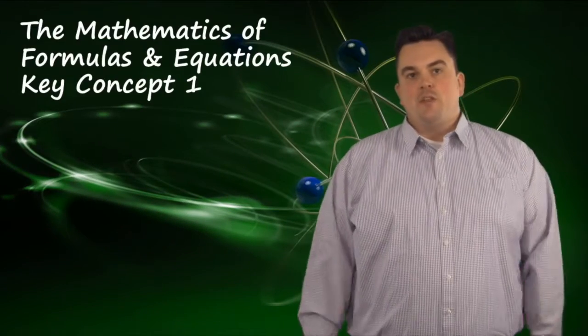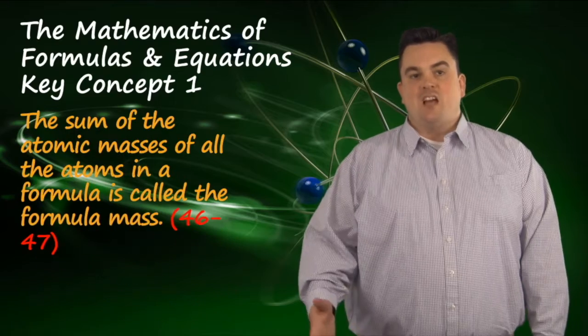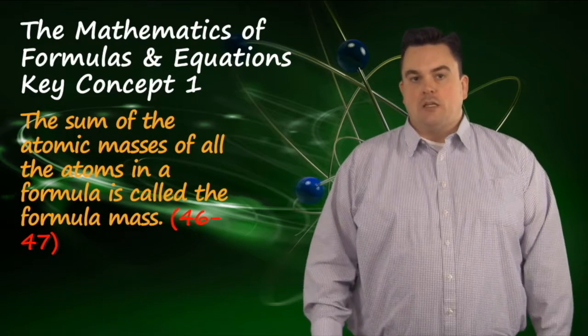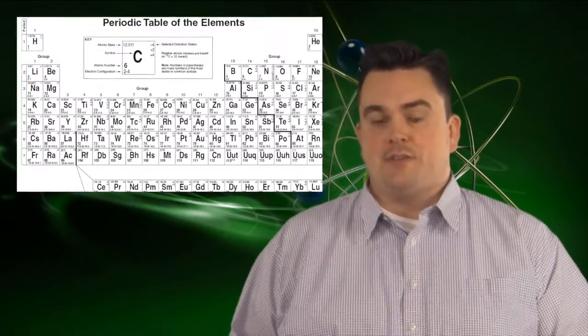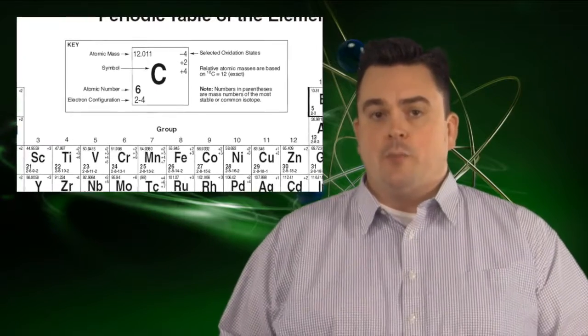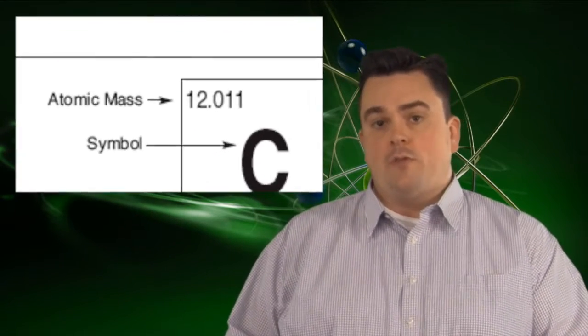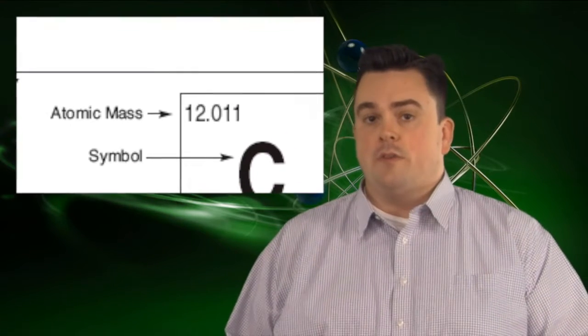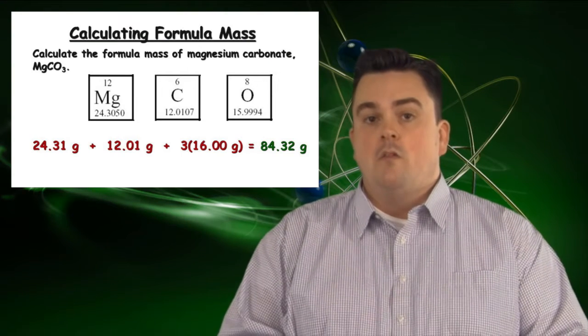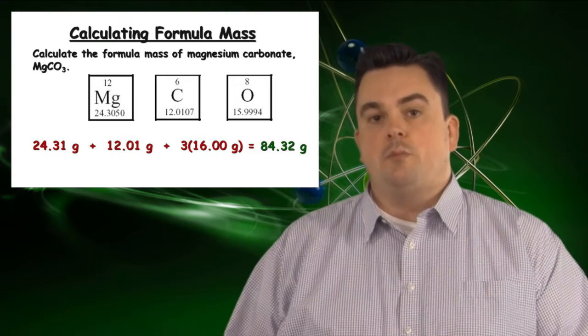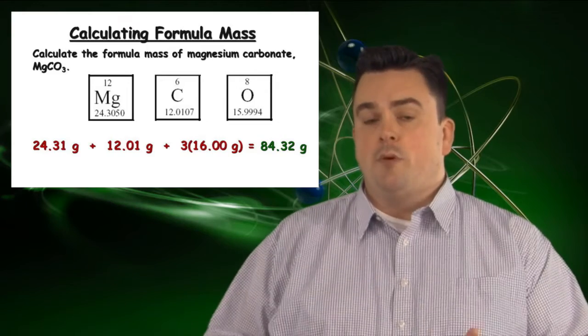The mathematics of formulas and equations key concept one: The sum of the atomic masses of all the atoms in a formula is called the formula mass. When finding formula mass you have to look up the atomic masses of all of the elements in that compound on your periodic table. The masses for each one of those elements can be found in the upper left hand corner of each element. You also have to remember that when you are finalizing your atomic mass calculation, you have to multiply the mass of the atom times the subscript for that substance. For instance, MgCO3, for the oxygen we would have to multiply the O's mass times 3 before adding it to the total.